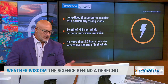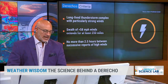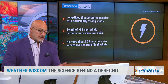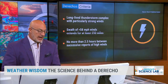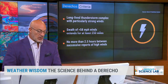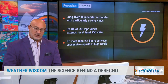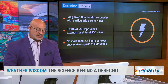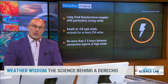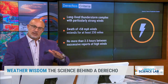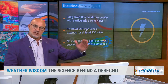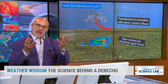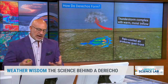By definition, from the AMS glossary of meteorology: a long-lived thunderstorm complex with particularly strong winds — a swath of greater than 58 mile per hour winds extending for more than 250 miles, and no more than 2.5 hours between successive reports of high winds. And a lot of times these derechos can pulse because they go up, regather themselves, and pulse on down again.